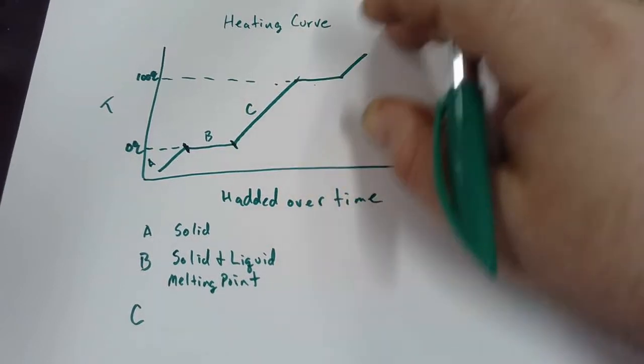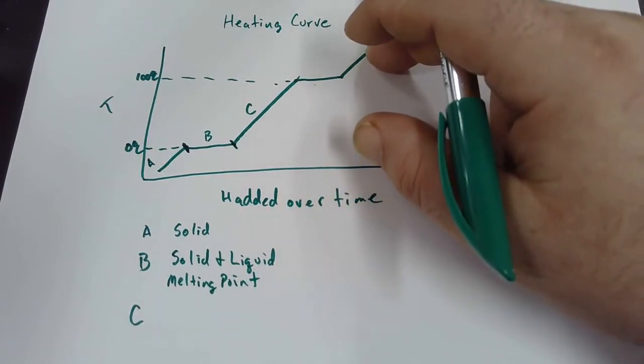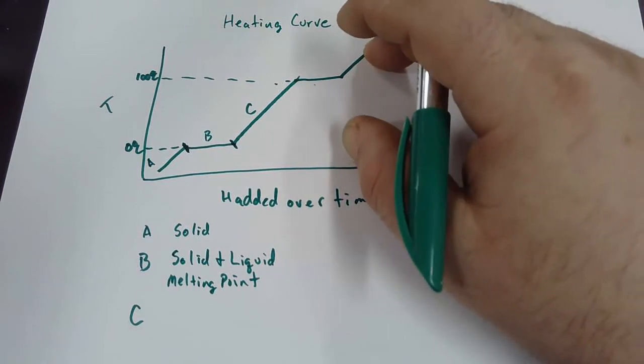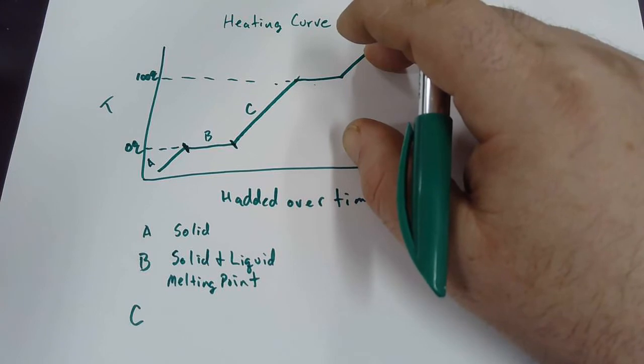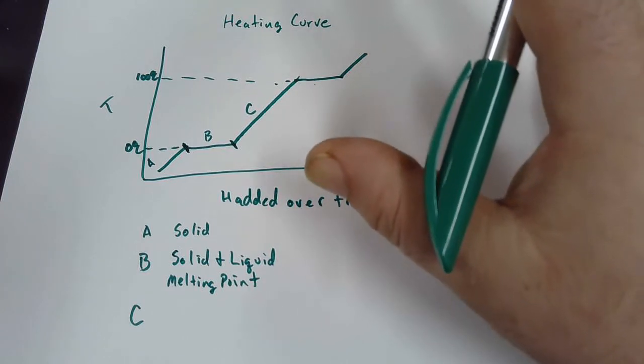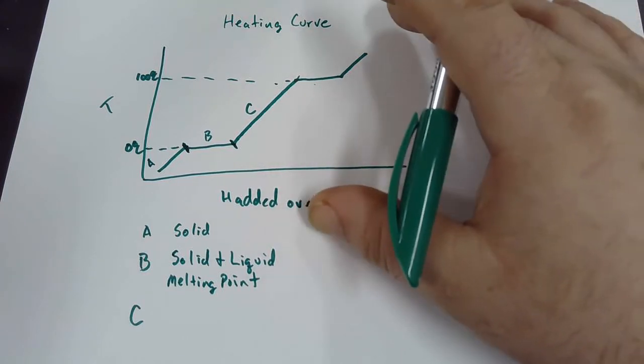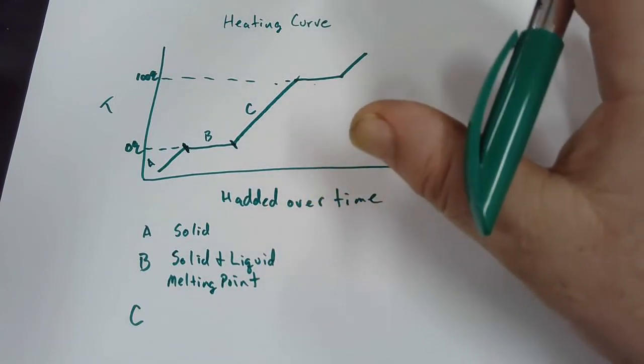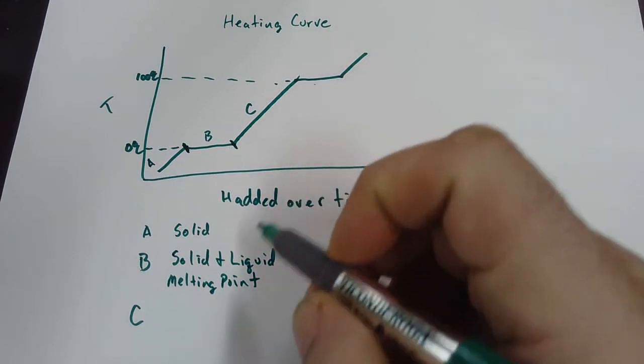So what phase or phases are going to be present on segment C? Is there going to be a gas between there? There could be, and you're thinking about diffusion Chris, and that's not bad. There could be some that becomes a gas, but the majority, if I'm in a closed container and there's not room for it to diffuse into a gas, it would all be a liquid.